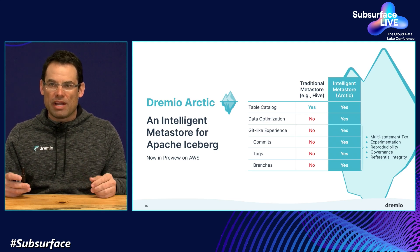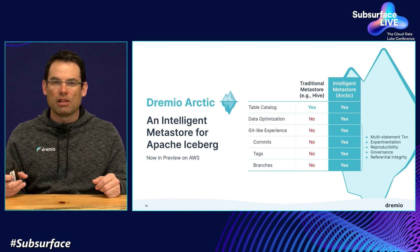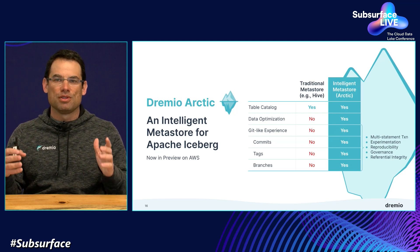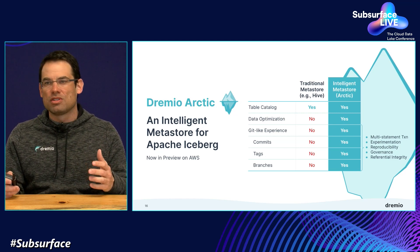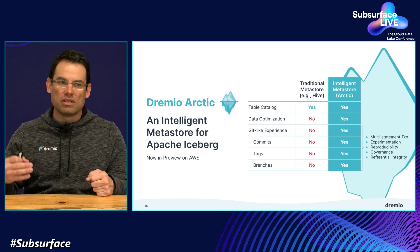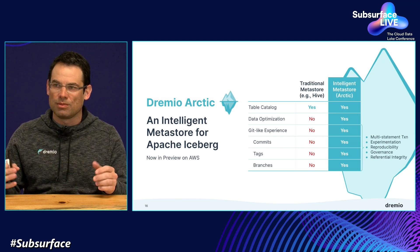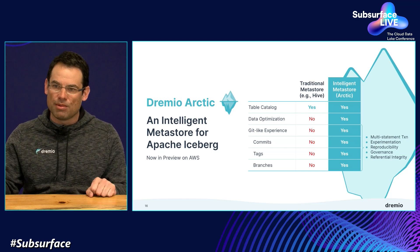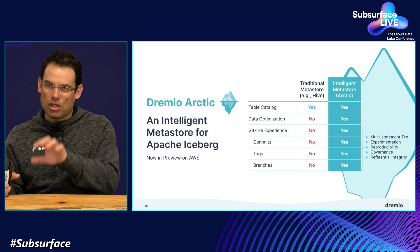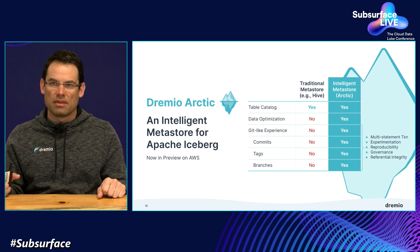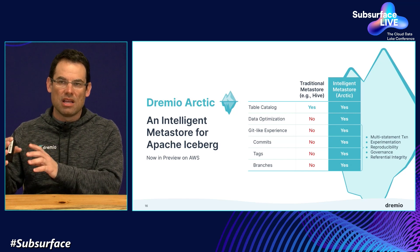What Dremio Arctic also does — and this is groundbreaking — is provide a Git-like experience: things like commits, tags, and branches. These are things that have been available in systems like GitHub and GitLab forever, and every developer uses them for source code. We're now bringing that to the world of data. For example, you can do multi-statement and multi-table transactions. You can experiment with data in a sandbox — if you're a data engineer ingesting and transforming data, you can test it before exposing it to everyone else. You create a branch for the ETL work, do all the work in that branch, and when you're done and it's tested, you merge it back into the main branch.